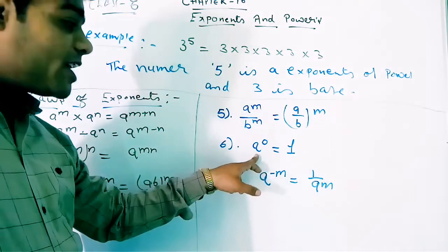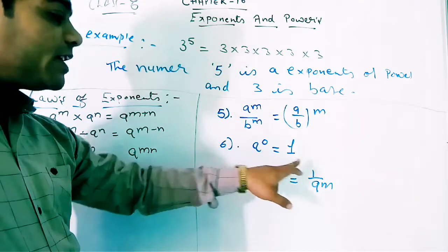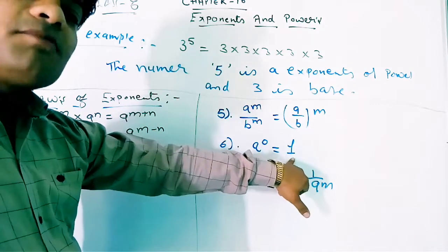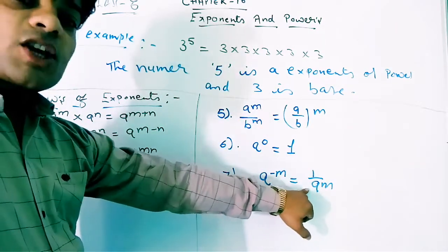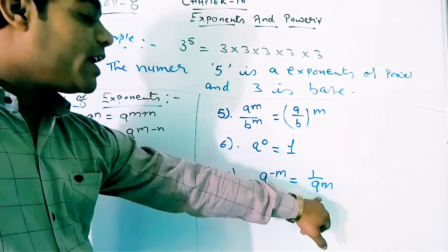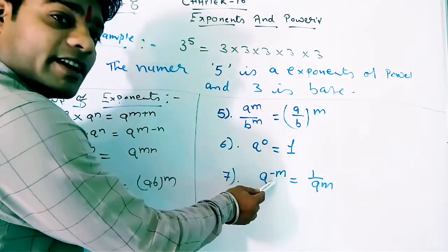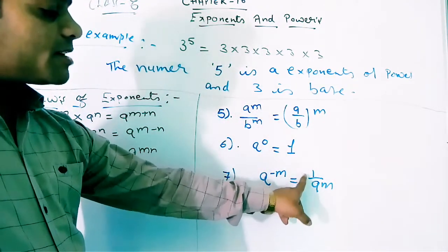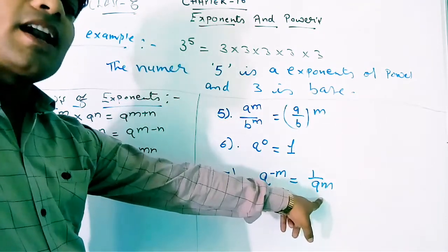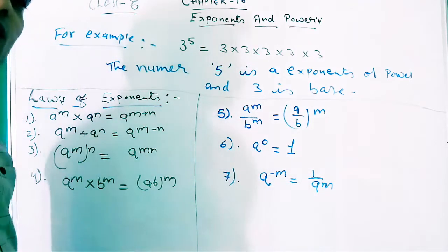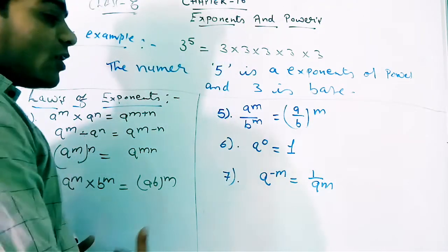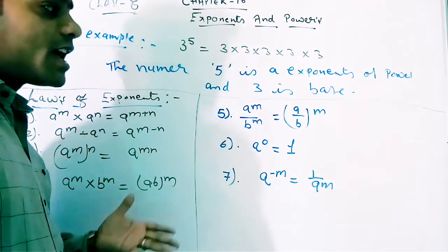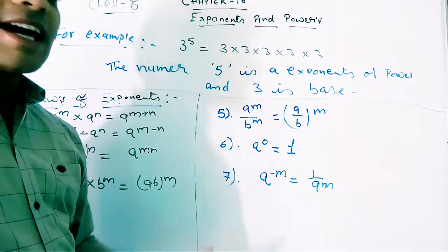Sixth law: when the power is 0, a raised to the power 0 directly becomes 1. Seventh law: a raised to the power minus m is equal to 1 upon a raised to the power m. When the power is negative, it becomes a reciprocal — 1 upon a^m. These are the seven laws we must use in this chapter. Without these laws we cannot solve the sums, so you have to learn and practice them with the exercises.